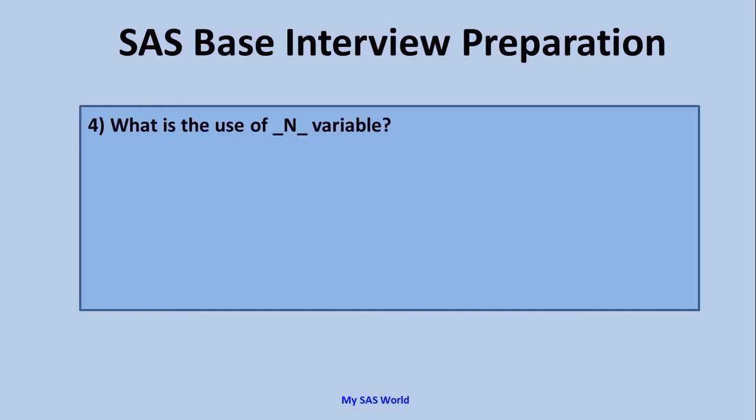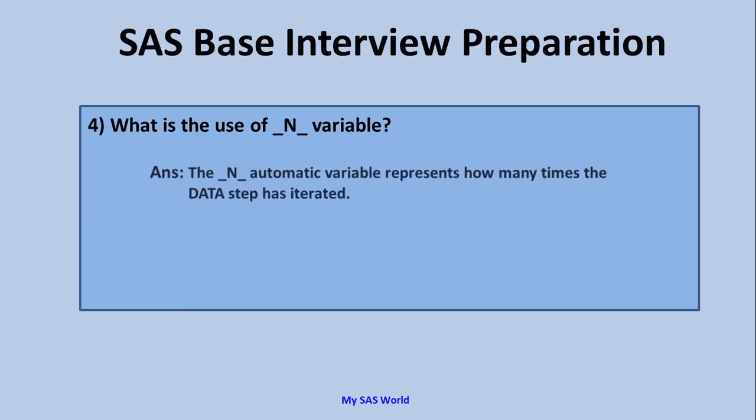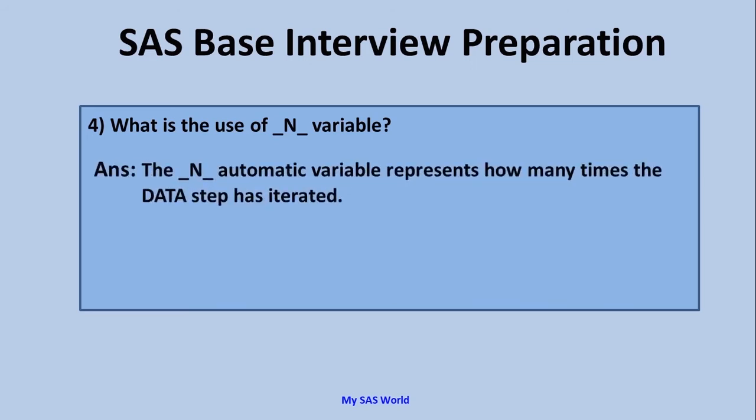Next question: what is the use of the _N_ automatic variable? The _N_ automatic variable represents how many times the data step has iterated. In simple language, if SAS is reading the first observation, then the value of _N_ is one. If it's reading the fifth observation, then the value of _N_ is five.